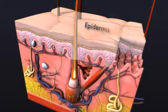Your skin is composed of three layers. The outer layer, or epidermis, is made up of cells called keratinocytes.